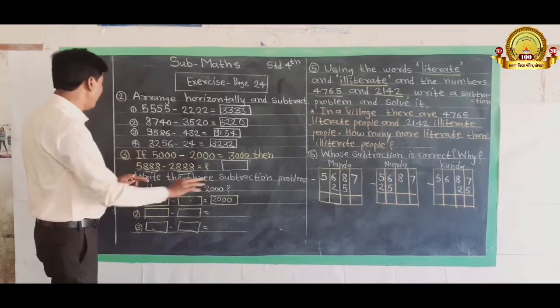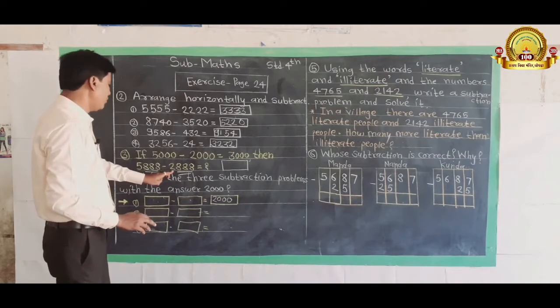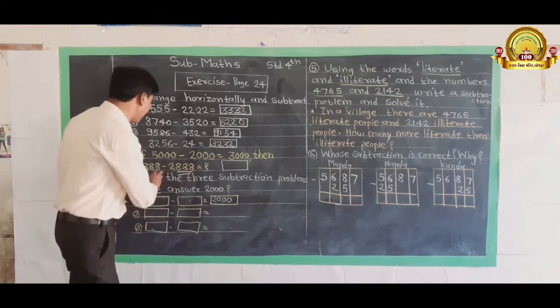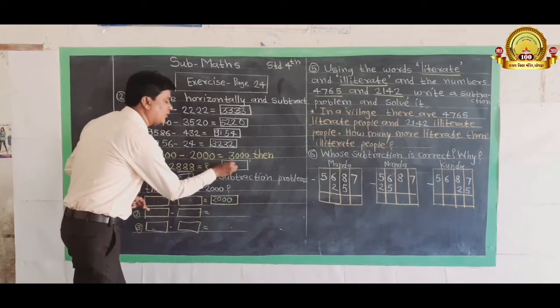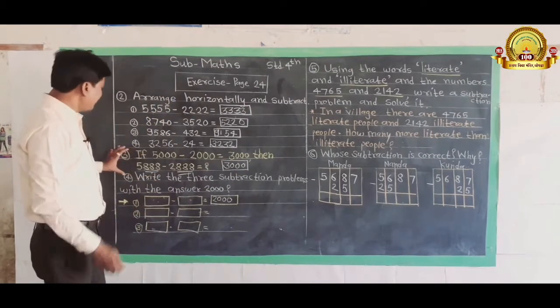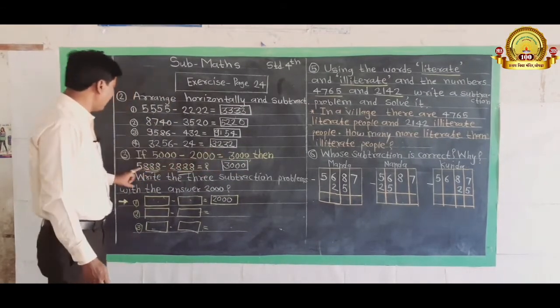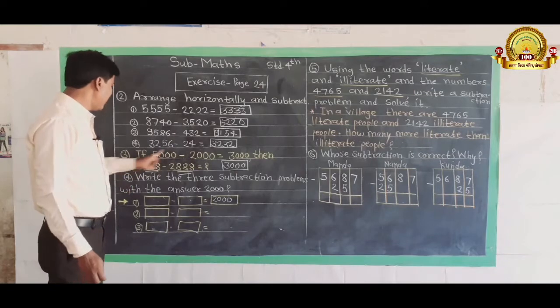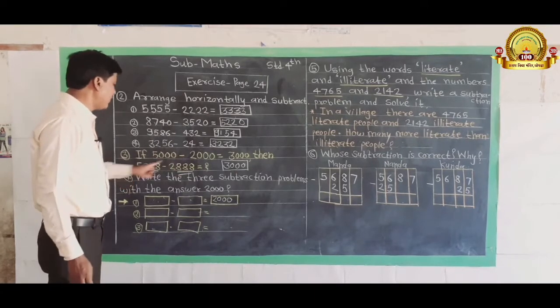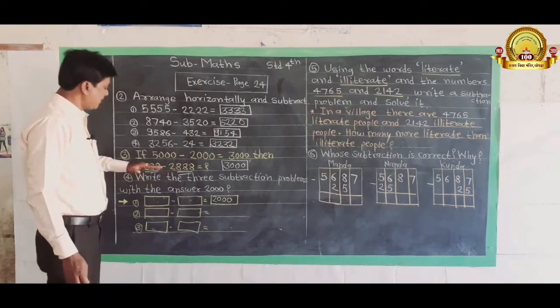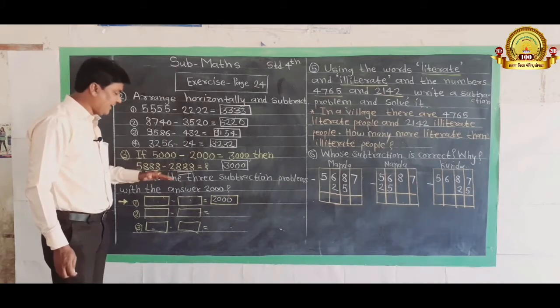This becomes 0080 near 2000, and it becomes 3000. By the time, it will be 1 minus 2000. The clue is just that. 2,000 minus 888.